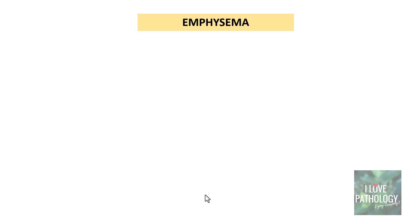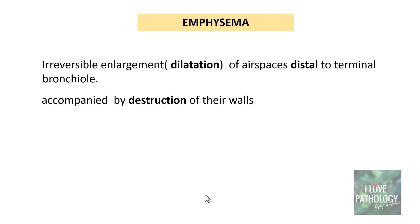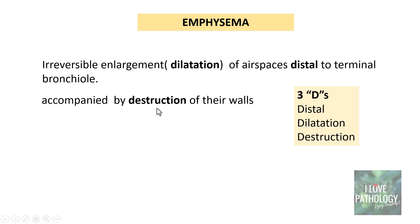Emphysema by definition is irreversible enlargement — that is, dilatation — of air spaces distal to the terminal bronchiole, almost always accompanied by destruction of the walls of the respiratory tree distal to the terminal bronchiole. Remember the 3 Ds of emphysema: distal dilatation associated with destruction.